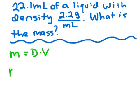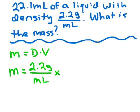I'm going to get mass is equal to the density which is 2.2 grams per milliliter times the volume which is 22.1 milliliters. And that is going to equal 48.6.